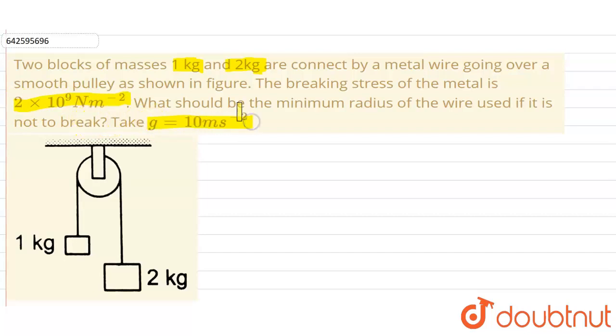In the given figure we have been given two masses of 1 kg and 2 kg connected with a string over a smooth pulley. Now we have to calculate the minimum radius of this wire so that the wire doesn't break.